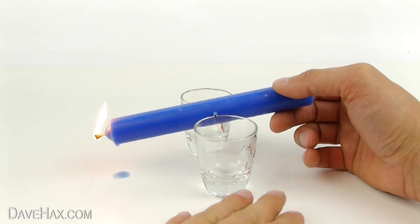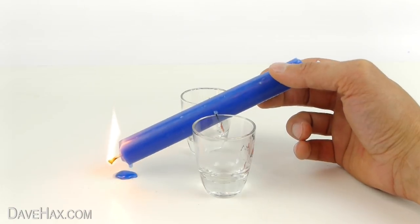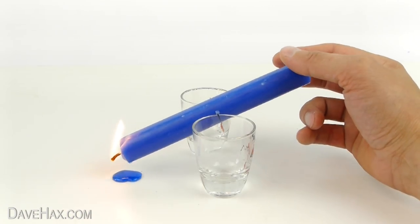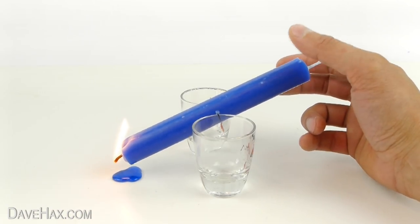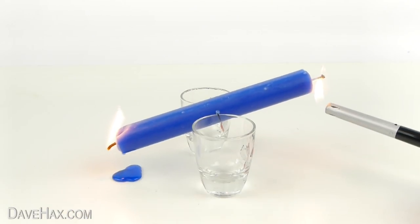As it burns and the wax drips, it should become lighter and start to reach balancing point. When it does, use your lighter and light the other side.